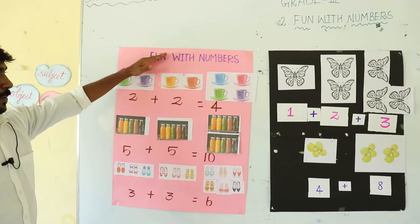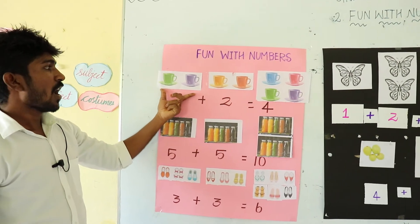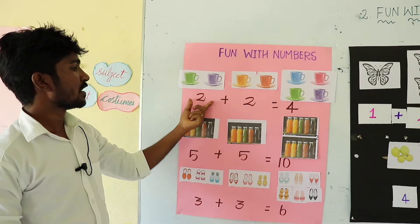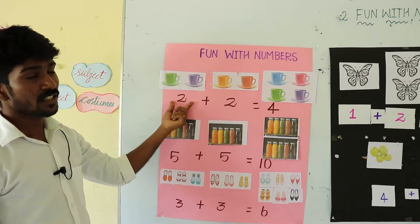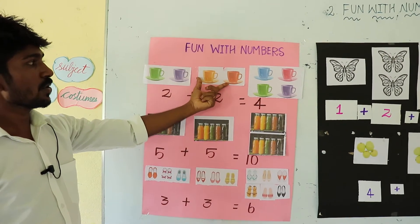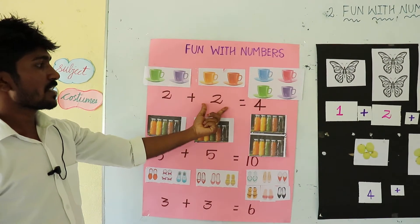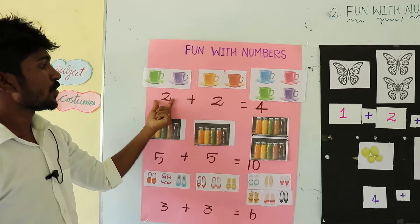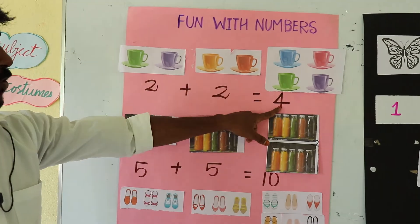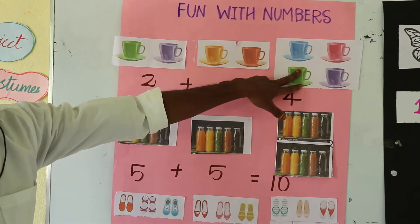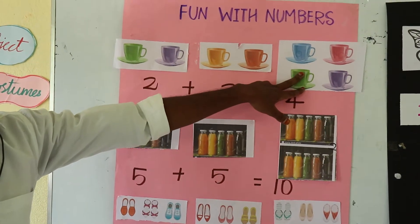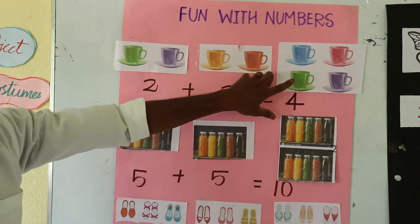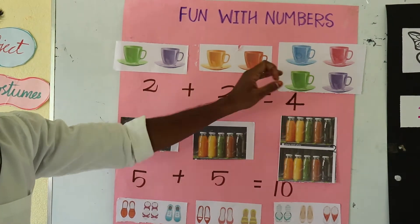Look at the chart paper. First one, how many cups are there? The answer is 2. Second one also, answer 2. So 2 plus 2 is equal to 4. Here how many cups are there? 4 cups. So 2 plus 2 is equal to 4.